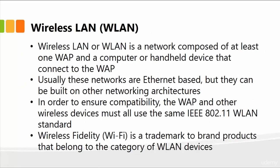The wireless LAN, or WLAN, is a network composed of at least one wireless access point and a computer or handheld device that connects to the WAP. Usually these networks are Ethernet-based using UTP cables — Category 5 cables — but they can be built on other networking architectures as well, such as Cat6 or shielded cables. To ensure compatibility, the WAP and all wireless devices must use the same IEEE 802.11 WLAN standards.